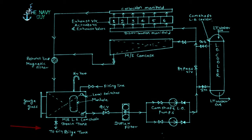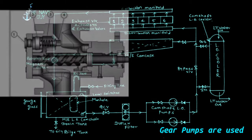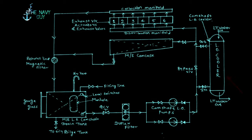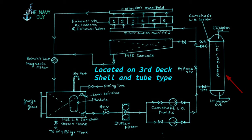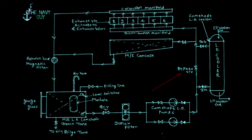Sludge accumulated in the drain tank is drained to the oily bilge tank via the drain valve. From here, the camshaft lube oil circulating pump takes suction via a duplex filter and delivers to the camshaft lube oil cooler. There are two pumps so that maintenance or failure of one does not affect the lubrication system; the pumps are of gear type. The camshaft lube oil cooler is located on the third deck and is of shell and tube type, cooled by low temperature water from the central cooling system, with a bypass valve for isolation during maintenance.